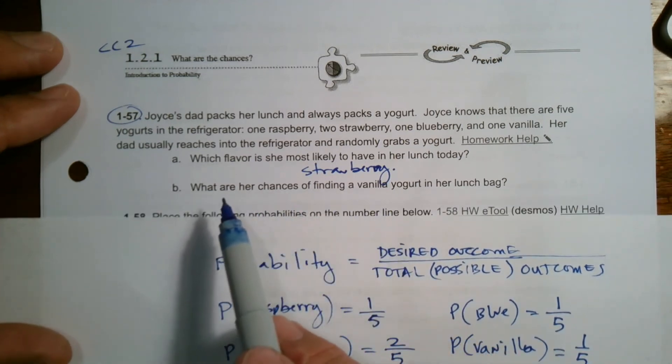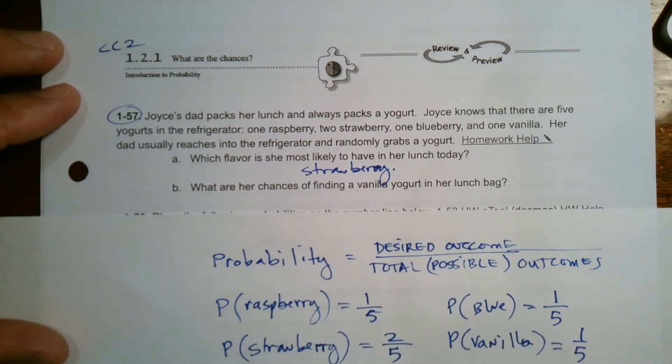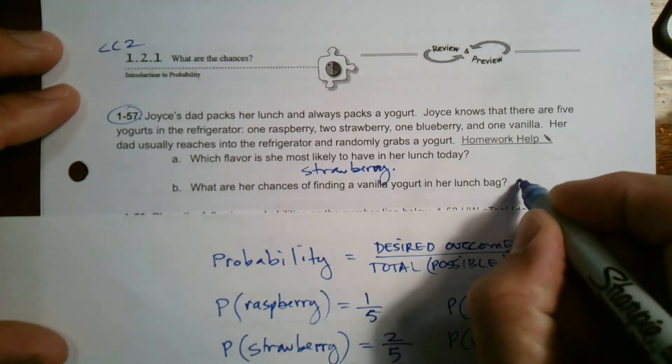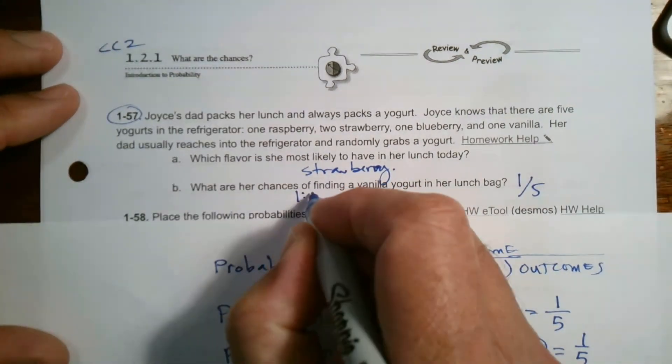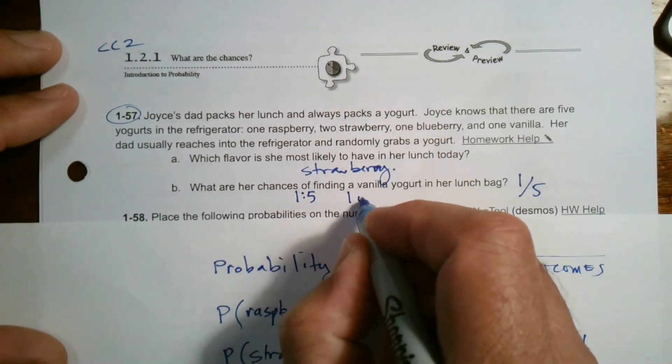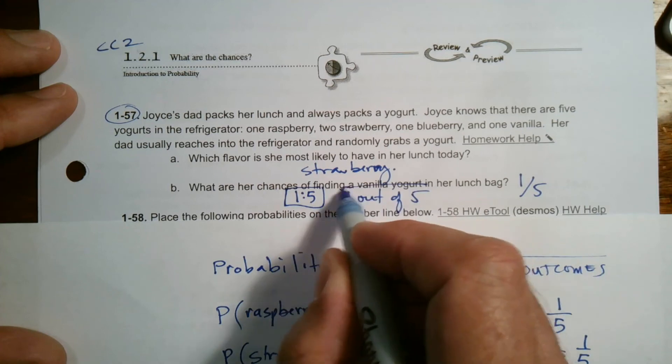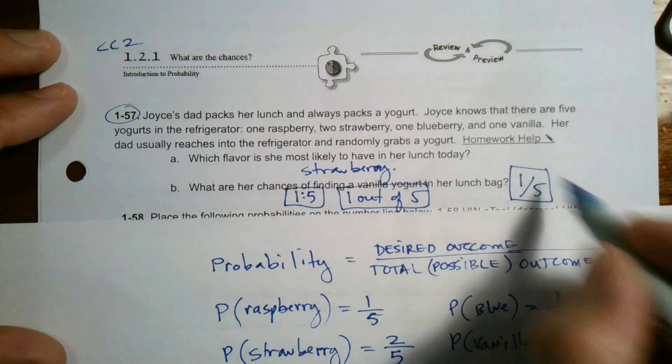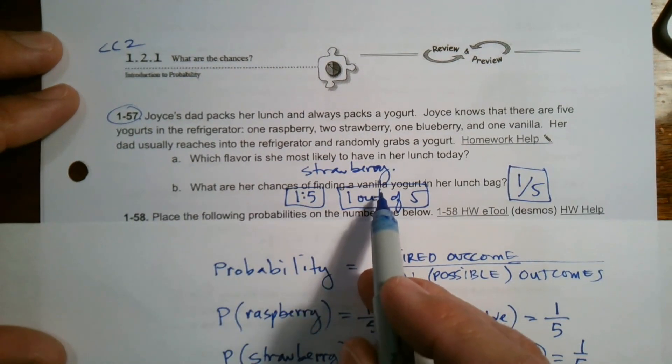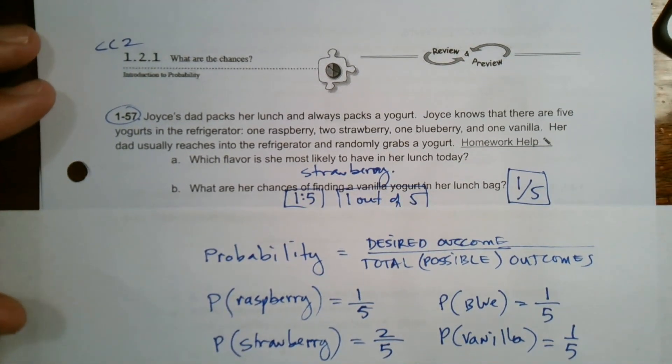Question B asks about her chances of finding vanilla yogurt. We already calculated that—her chances are 1/5. You can write it as a ratio, one out of five, or as the fraction one-fifth. That's her chance of getting vanilla because there's only one out of the total five yogurts.